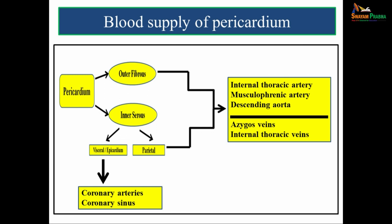The blood supply of pericardium: the pericardium is divided into an outer fibrous layer and an inner serous layer. The inner serous layer is further divided into visceral layer or epicardium and a parietal layer. The outer fibrous layer and the parietal layer of serous pericardium are supplied by the internal thoracic artery and its branch the musculophrenic artery, and also the descending branches from the descending aorta. The venous drainage is by the azygous veins and internal thoracic veins. The visceral layer or epicardium is supplied by the coronary arteries and venous blood is drained by the coronary sinus.